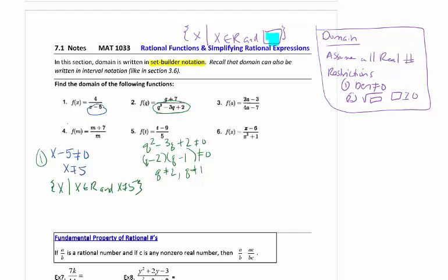So my answer for number 2, start with your variable, so notice it's a q this time. q can be a real number, and list your restrictions, q cannot equal 1 or 2.